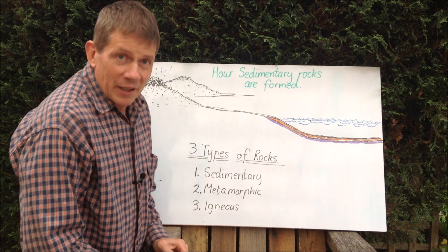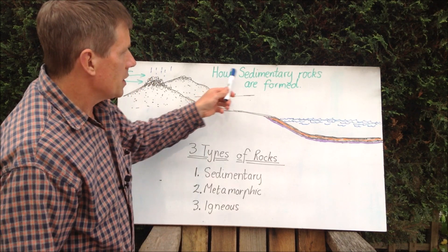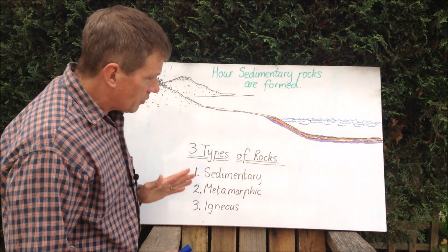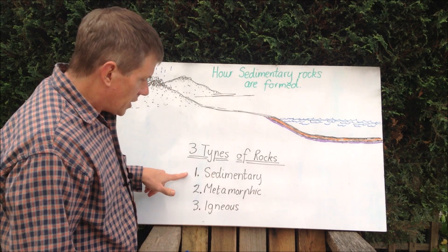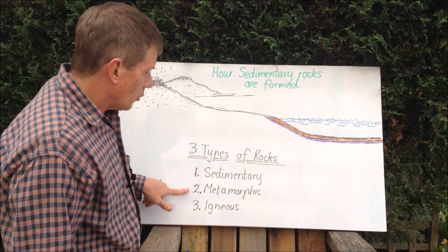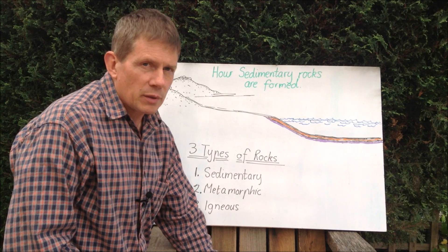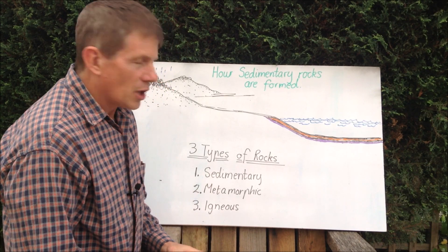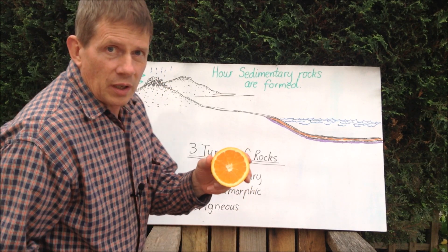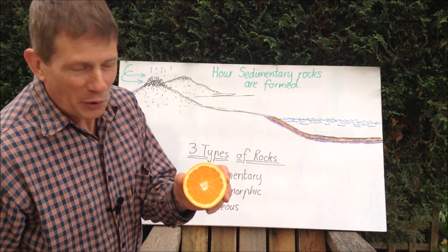Here's a little explanation of how sedimentary rocks are formed. There are three types of rocks: sedimentary rocks, metamorphic rocks, and igneous rocks. To explain those three types of rocks, it's good to think of the Earth using this orange model.